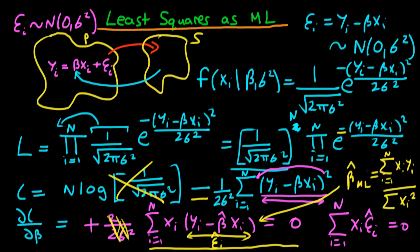This is identical to the least squares estimator. What this shows is that in the circumstances where we have normally distributed errors, maximum likelihood estimators of linear regression coefficients are actually identical to the least squares estimators. So in that sense, you can regard least squares estimators as a type of maximum likelihood estimator, or, in some senses, vice versa as well.